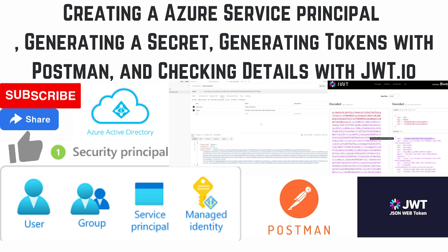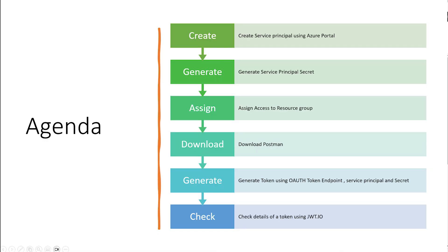Hello guys, welcome to our channel. My name is Balram Prasad and I am working with Microsoft as a senior software engineer. In today's demo we are going to see how we can create a service principal in Azure AAD, how we can generate a secret, how we can assign a service principal to a resource group or resources, then use Postman to generate a token, and also see how the token looks in the JWT.io tool.